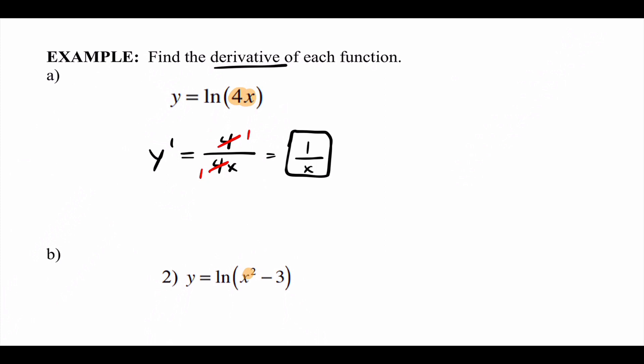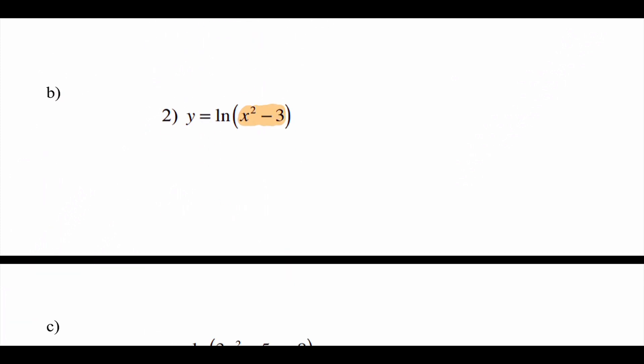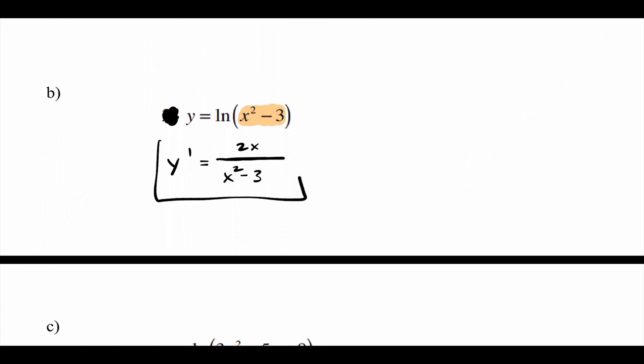Example B: y equals natural log of x squared minus 3. Same rule — find the derivative of the inside divided by the inside. The derivative of x squared minus 3 is 2x. So y-prime equals 2x over x squared minus 3. Can't factor the bottom, so we're done.